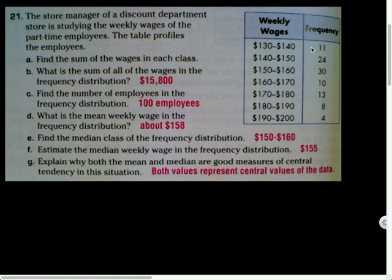In order to do that, we're going to have to make some assumptions. The assumption we end up making is that we'll assume that everyone earns 135 dollars from those 11 people. We're kind of assuming that on average they're probably all making about 135 dollars.